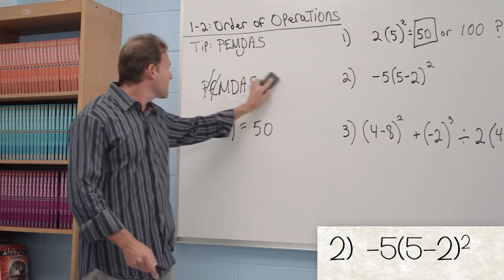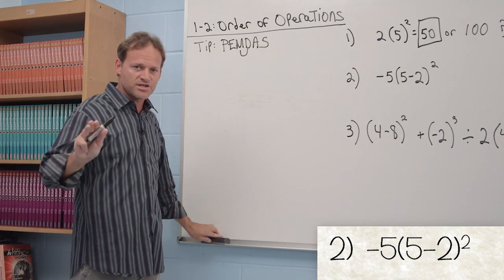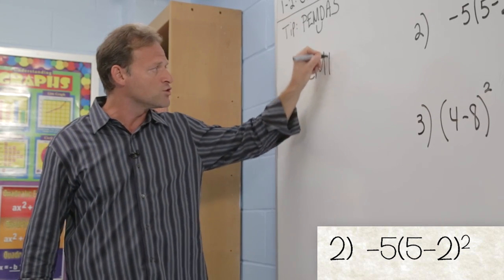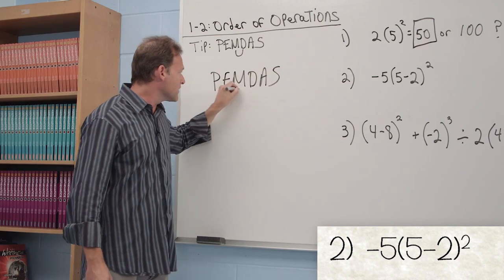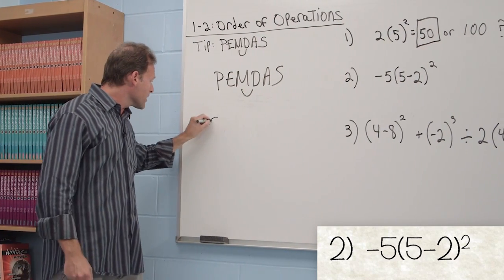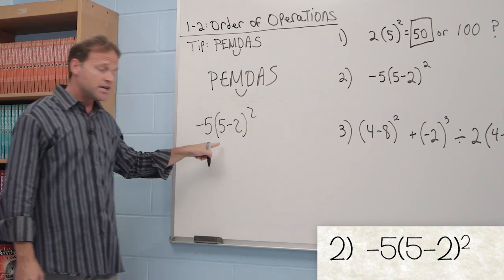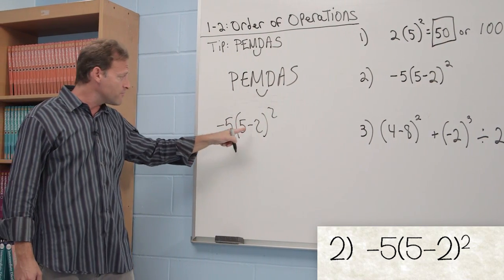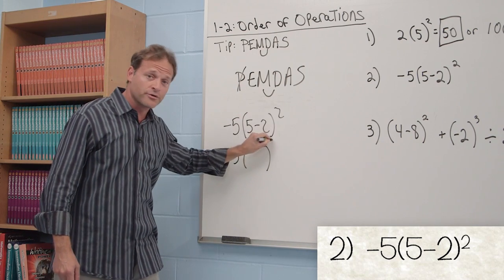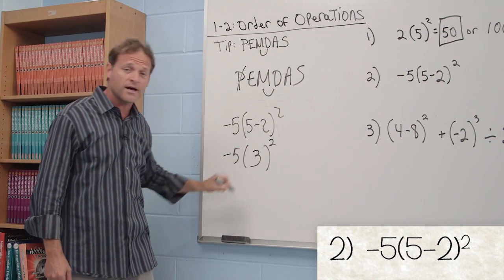Let's try problem number 2. The first thing to do here is don't skip any steps. Write the word PEMDAS just to help guide you as you go through this, and then scratch each letter out as you perform the operation. So we're going to write negative 5 times 5 minus 2 squared. Here we do have parentheses. 5 minus 2. Rewrite everything else. 5 minus 2 is equal to positive 3.